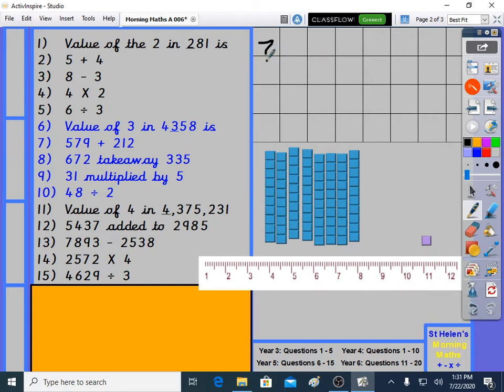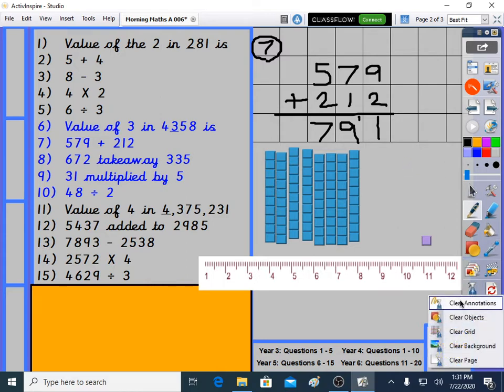Let's move on to question 7. Question 7 is 579 plus 212. 579 plus 212. 9 plus 2 is 11. Carry the 1. 7 plus 1 is 8. Plus 1 is 9. 5 plus 2 is 7. 791. Make sure you get that copied down.